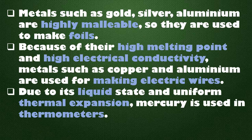Metals such as gold, silver, and aluminium are highly malleable, so they are used to make foils. Because of their high melting point and high electrical conductivity, metals such as copper and aluminium are used for making electric wires. Due to its liquid state and uniform thermal expansion, mercury is used in thermometers.